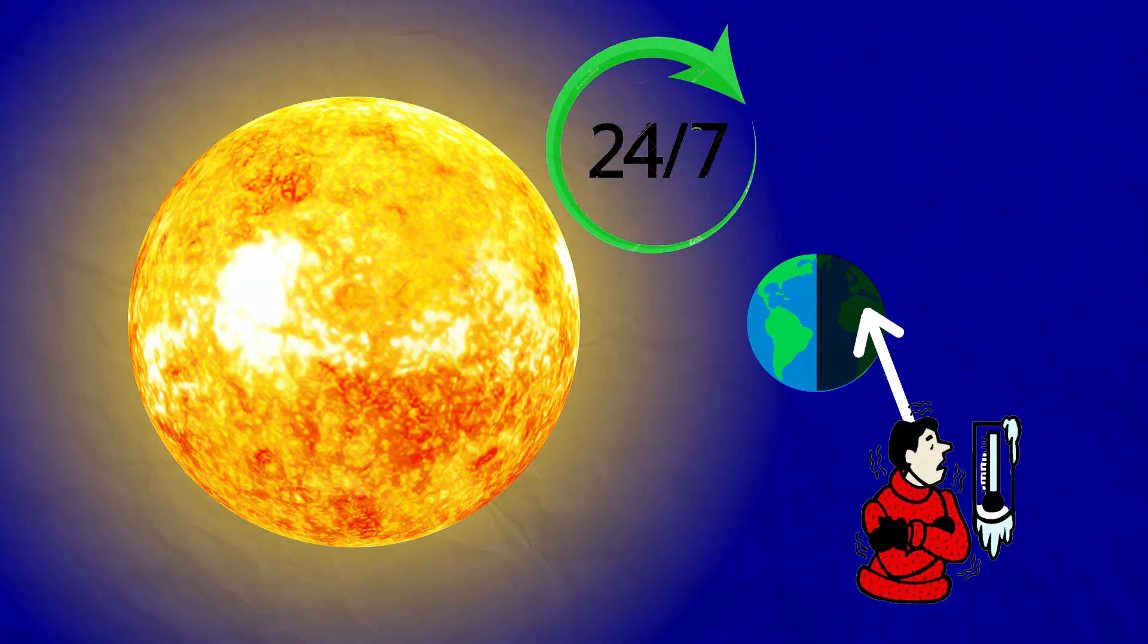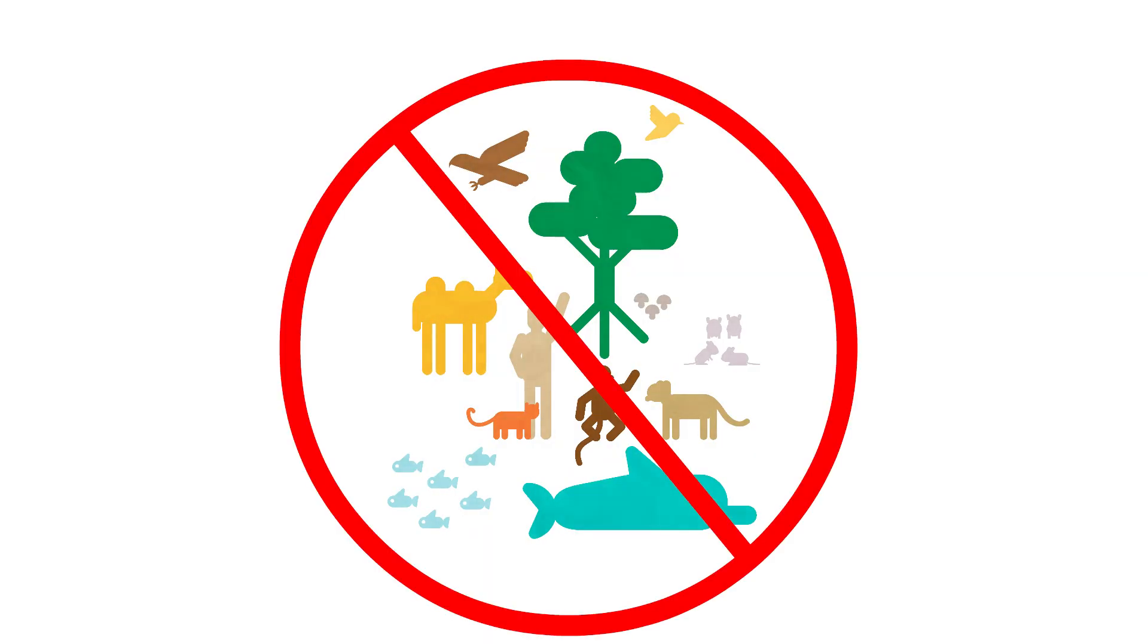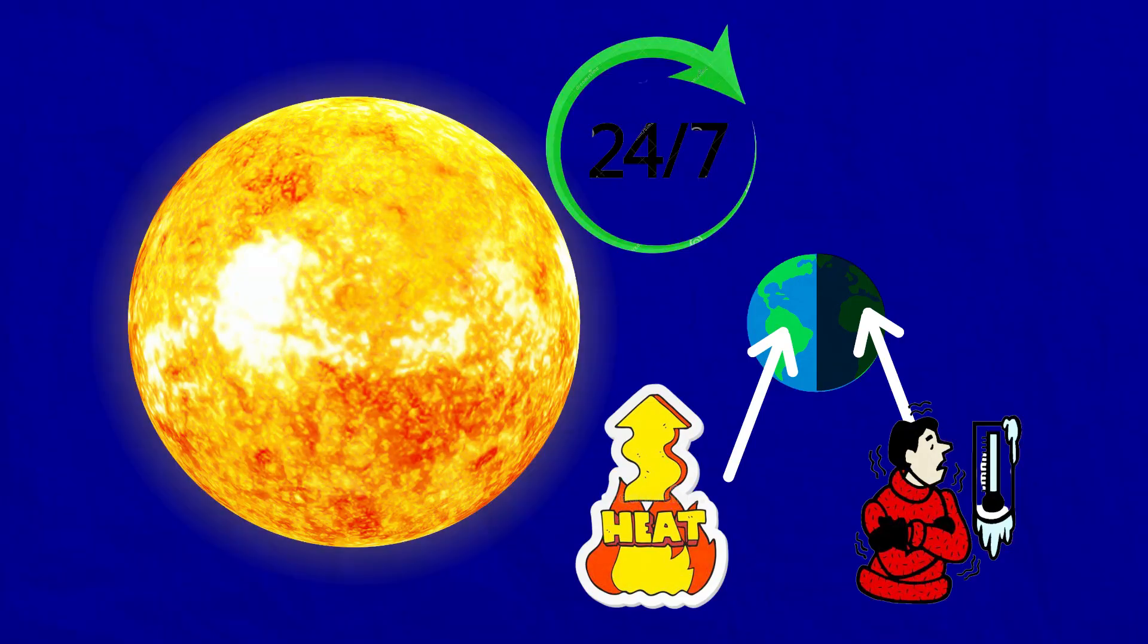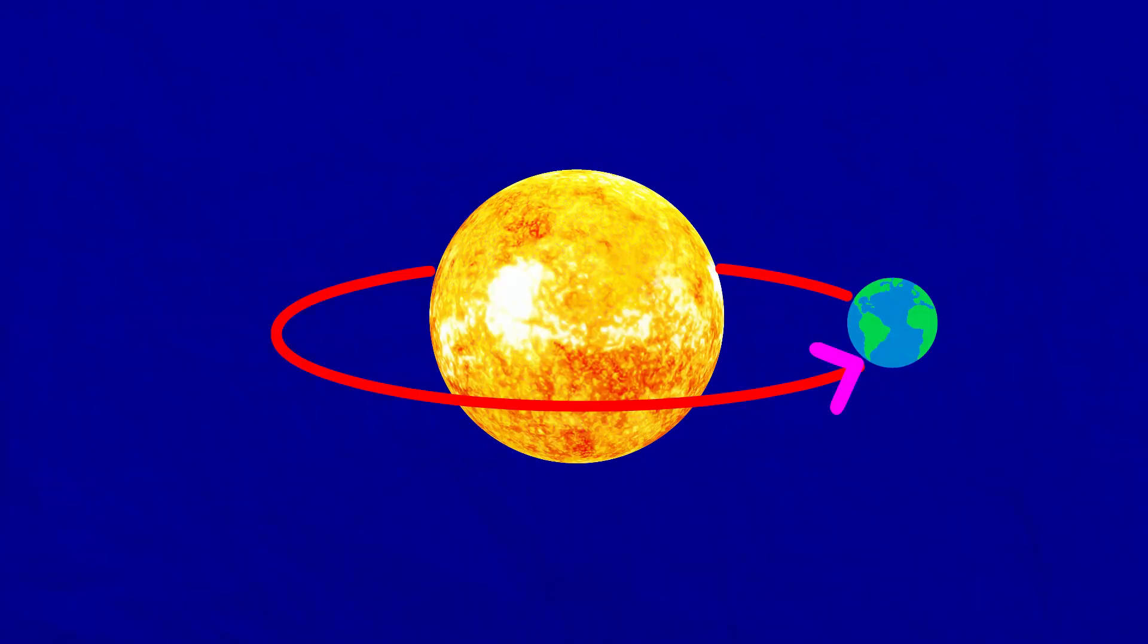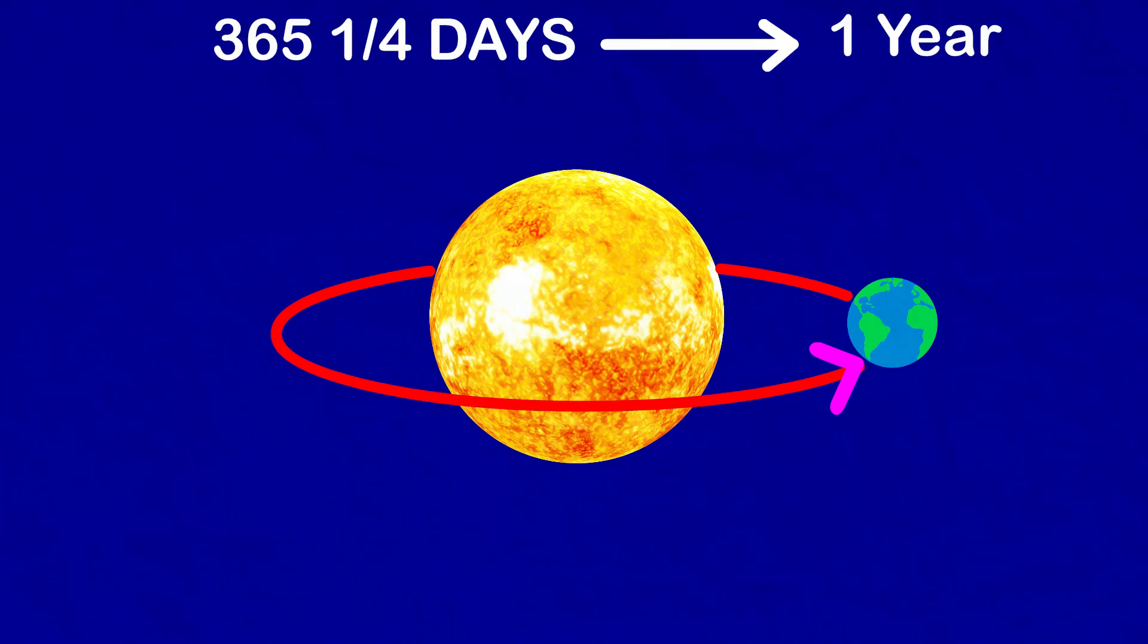The second motion of the earth around the sun in its orbit is called revolution. It takes 365 and one-fourth days, which is one year, to revolve around the sun.